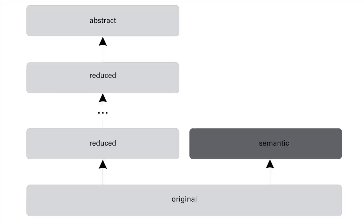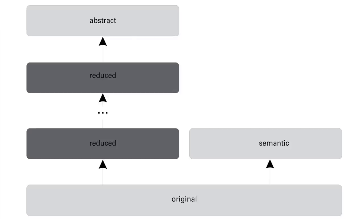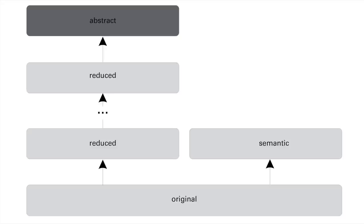The semantic level links to a cross-platform semantic like a context menu or a labeled list of images. The variable number of reduced levels provides step-by-step abstractions for platforms with less or different capabilities compared to the source platform. Finally, the abstract level is a modality-independent definition, for example to translate a GUI-based definition for natural language-based interaction.